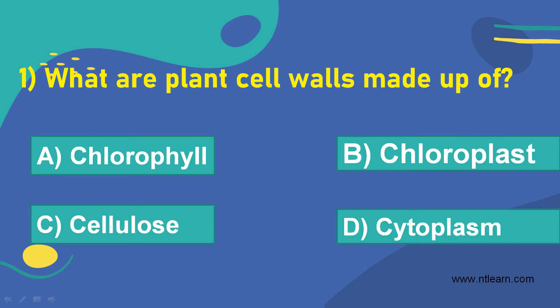The first question is: what are plant cell walls made up of? Option A: chlorophyll. Option B: chloroplast. Option C: cellulose. Option D: cytoplasm.